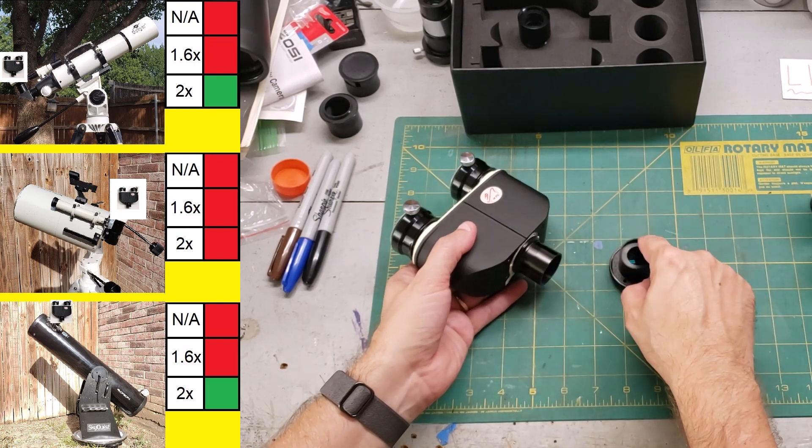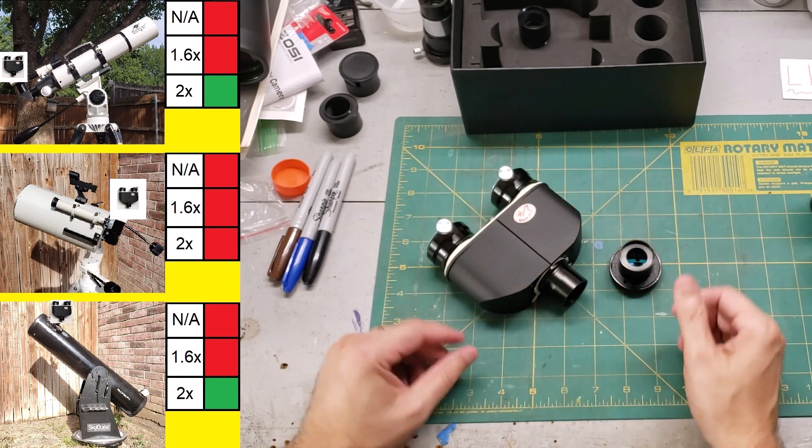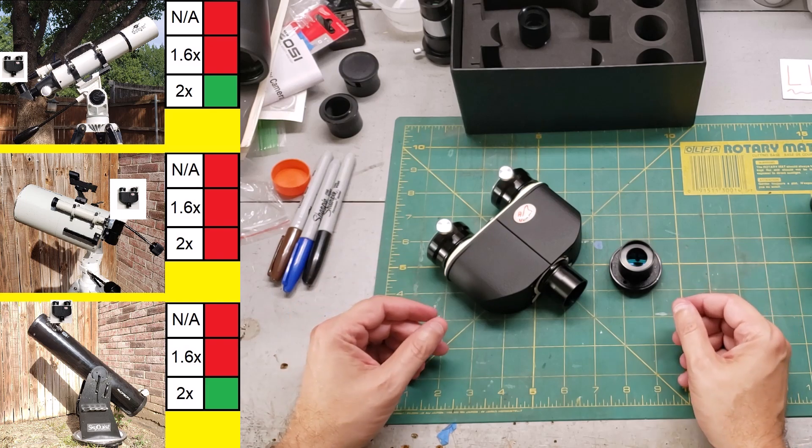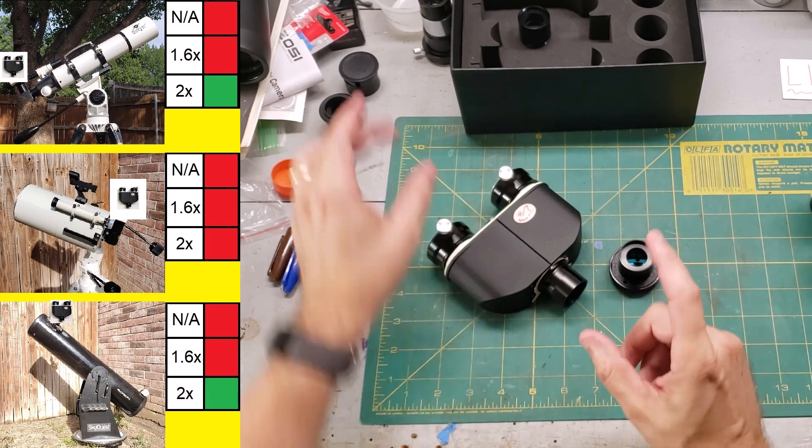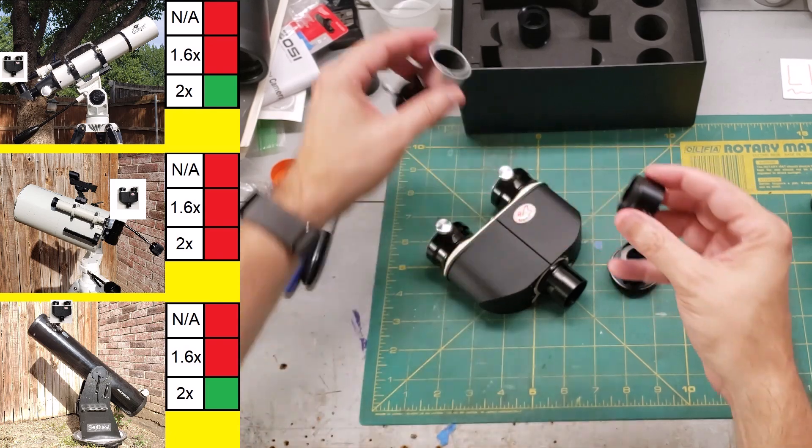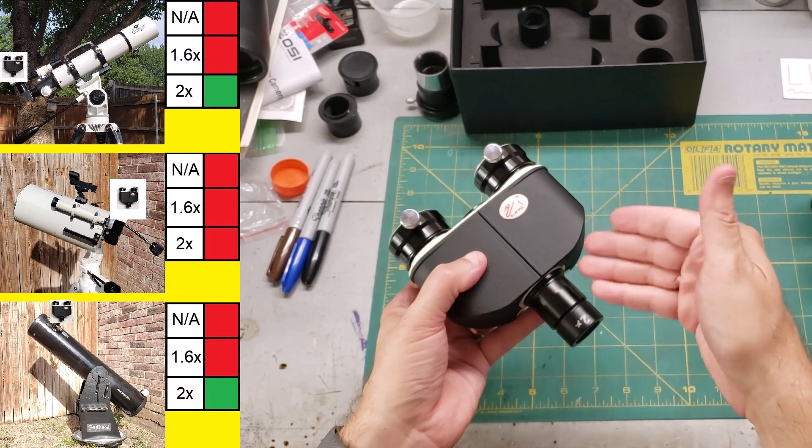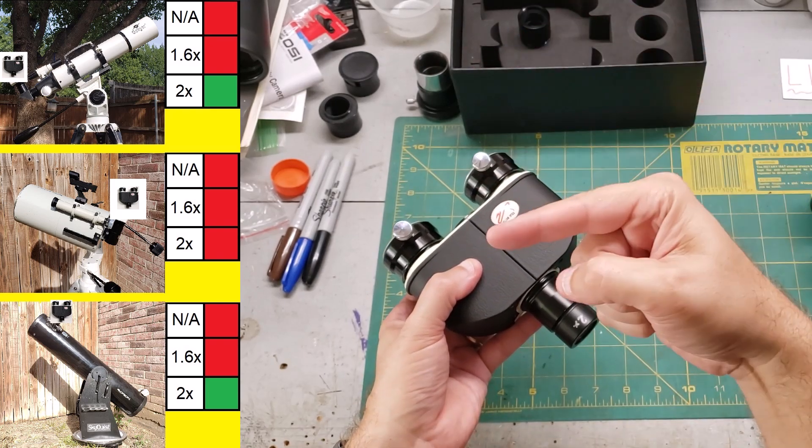When I took this out and screwed it to the end, I couldn't get it to work on any of my telescopes. So I had a bino viewer that wouldn't work on any of my telescopes. I did find, though, that if I took the end of a 2X Barlow and screwed this into the end like that, I found that this did work in the refractor and the 8-inch Dobsonian.